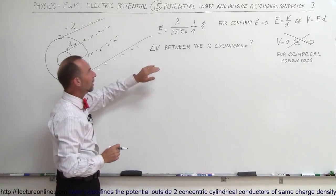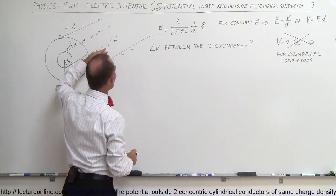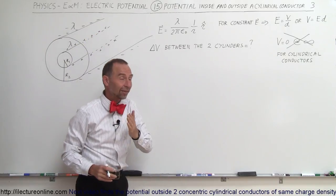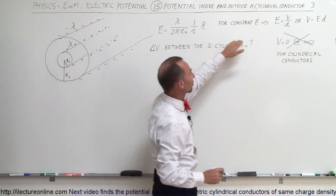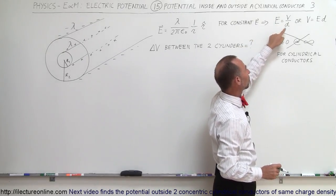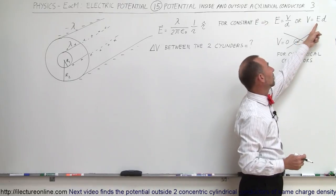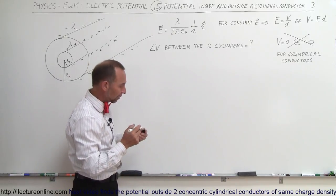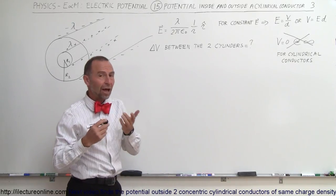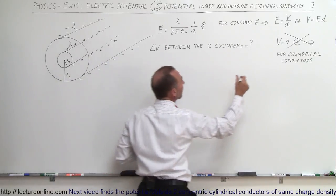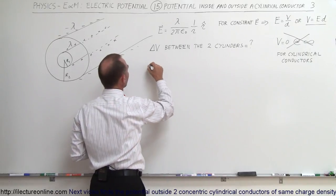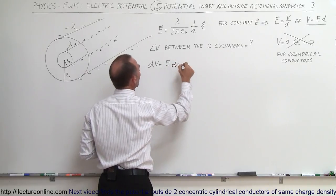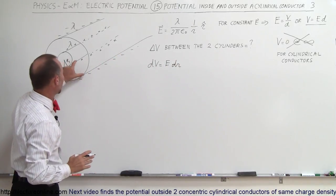Because of that, we can use the same principle: the electric field outside the first cylinder is defined by the positive linear charge density of the inside cylinder, not affected by the outside cylinder. We also know that for a constant electric field, the relation between E and V is E times distance. But since we're dealing with a non-uniform electric field outside the cylinder, we write dV equal to the strength of the electric field — which is a function of the radius — times dr. That's how we'll find the difference in potential between these two cylinders.